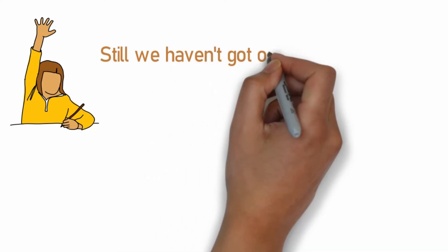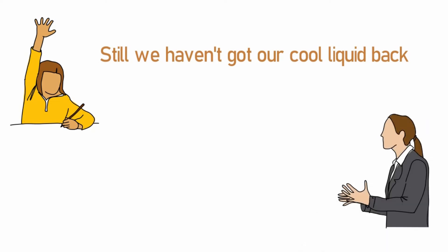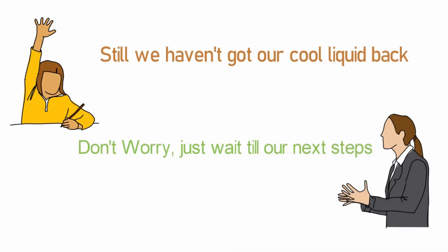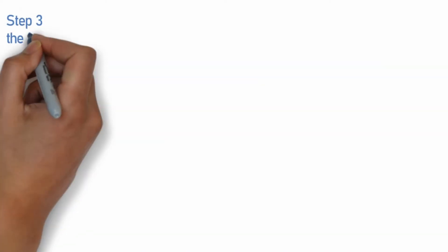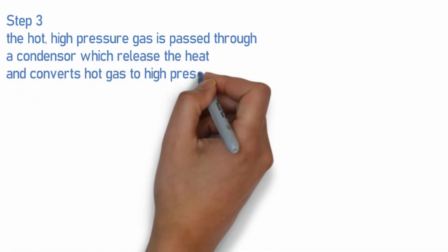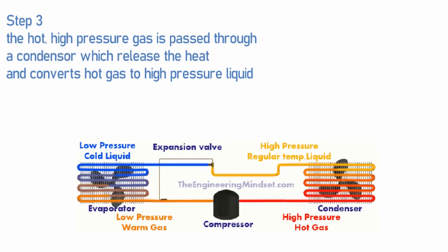But still we haven't got our cool liquid back. Don't worry, just wait till our next steps. The hot high pressure gas is passed through a condenser which releases the heat and converts hot gas to high pressure liquid.